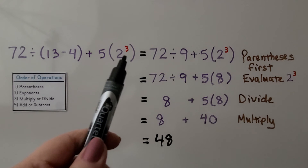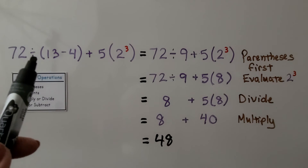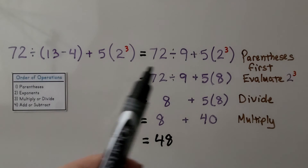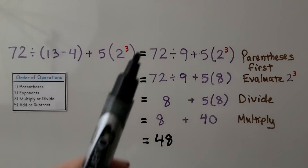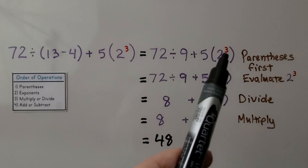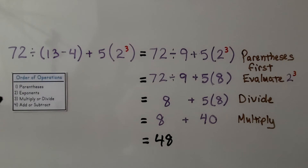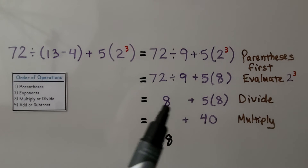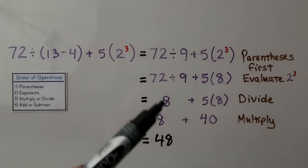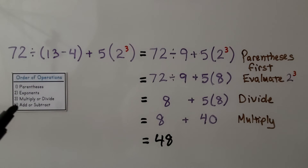Here we have two sets of parentheses — one indicates multiplication because the 5 is right next to it. We have 72 divided by (13 minus 4): 13 minus 4 is 9, so we have 72 divided by 9. We also have 2 raised to the third power: 2 times 2 times 2 is 8, so that means we have 5 times 8. For multiply or divide, we go left to right: 72 divided by 9 is 8, then 8 plus 40 gives us 48.